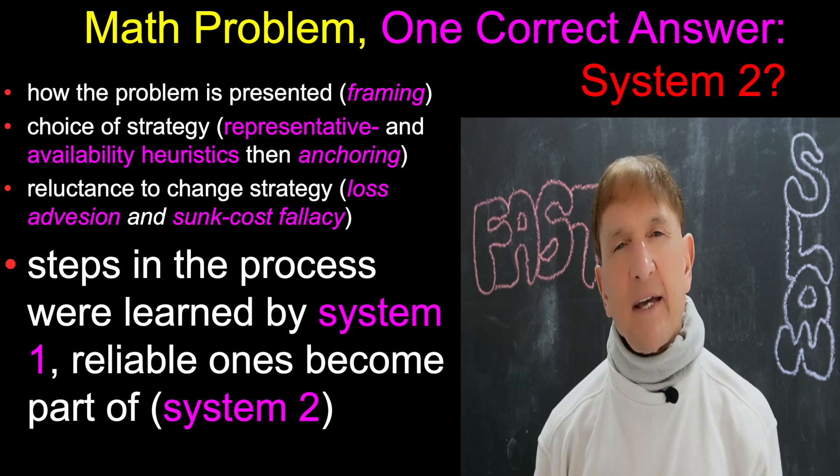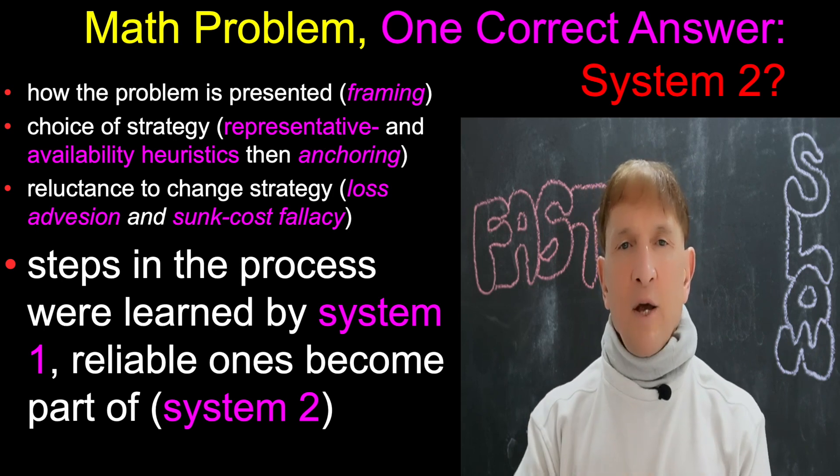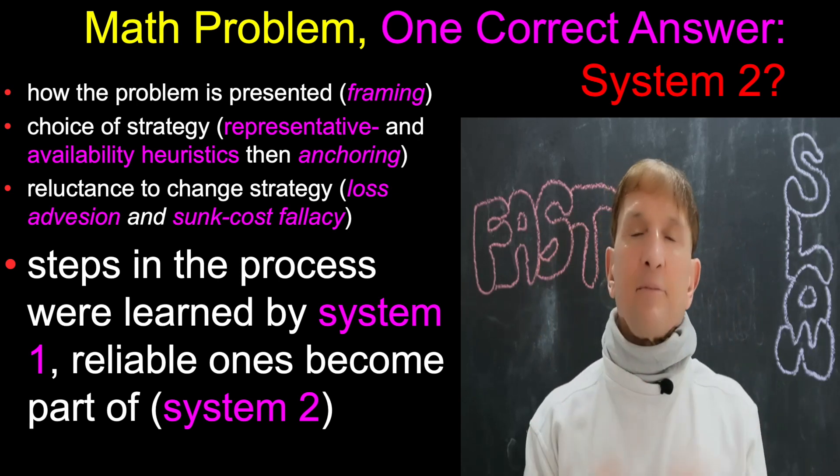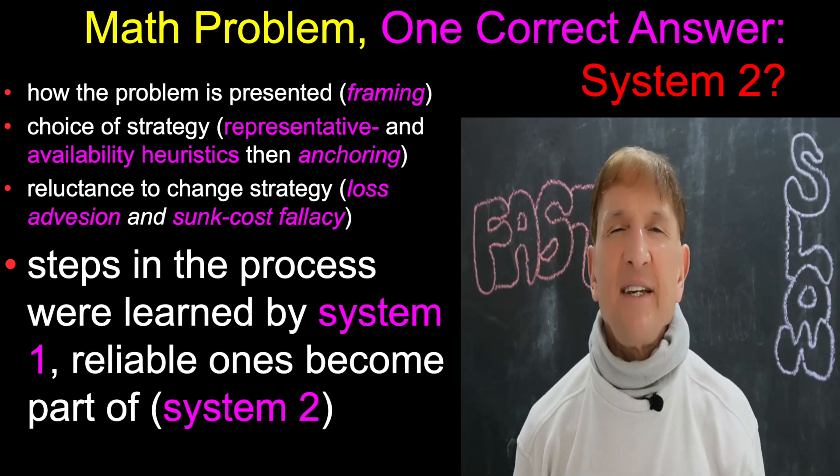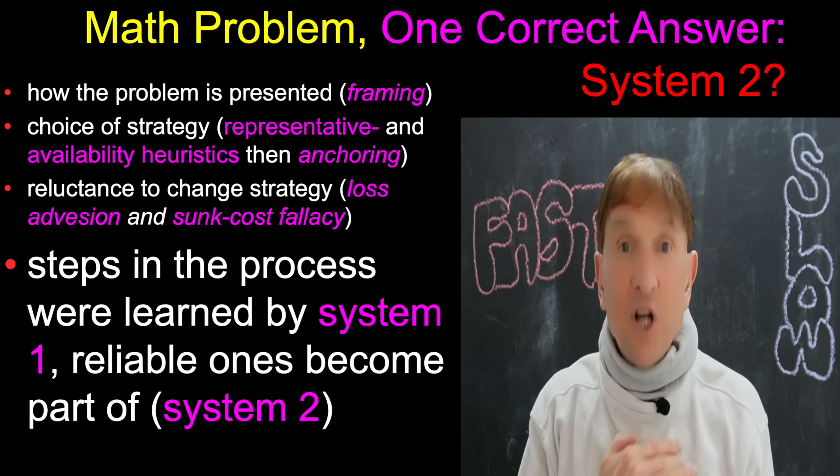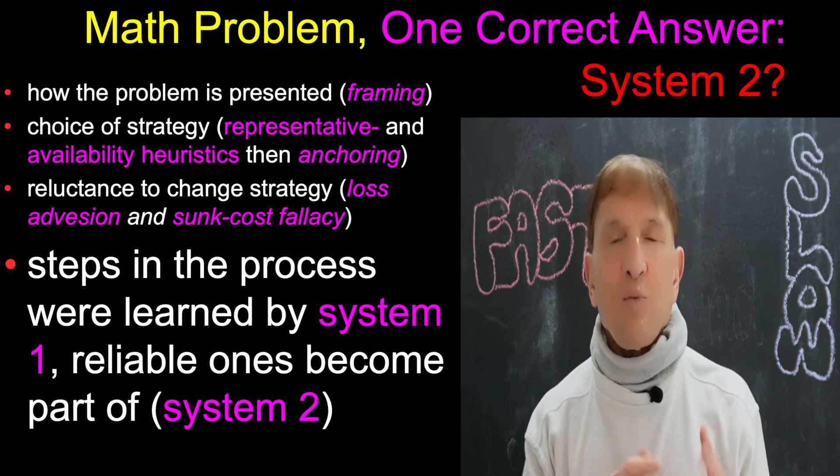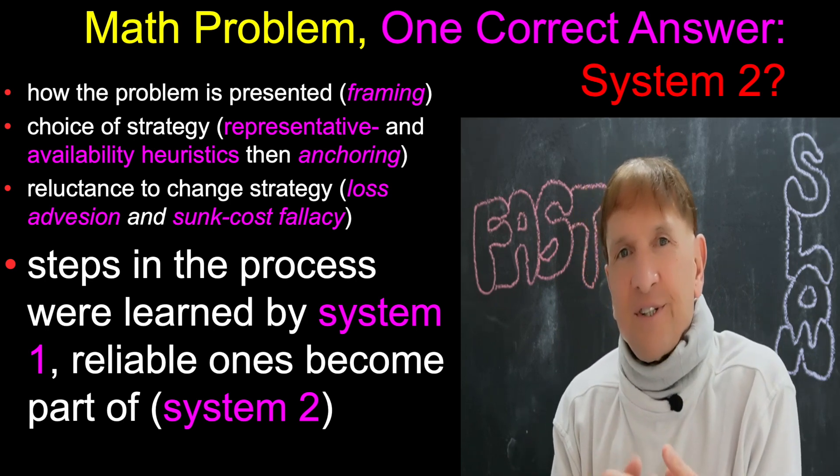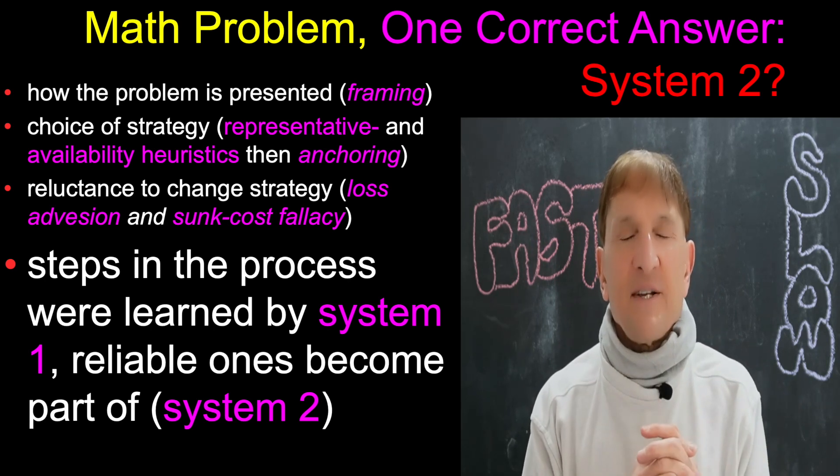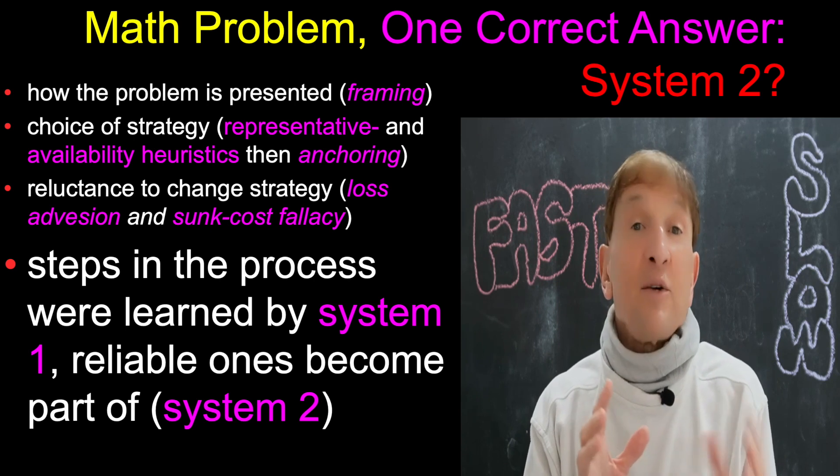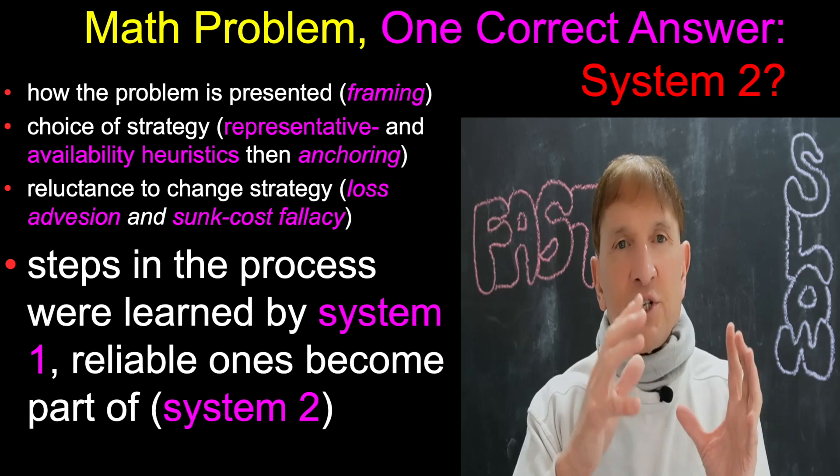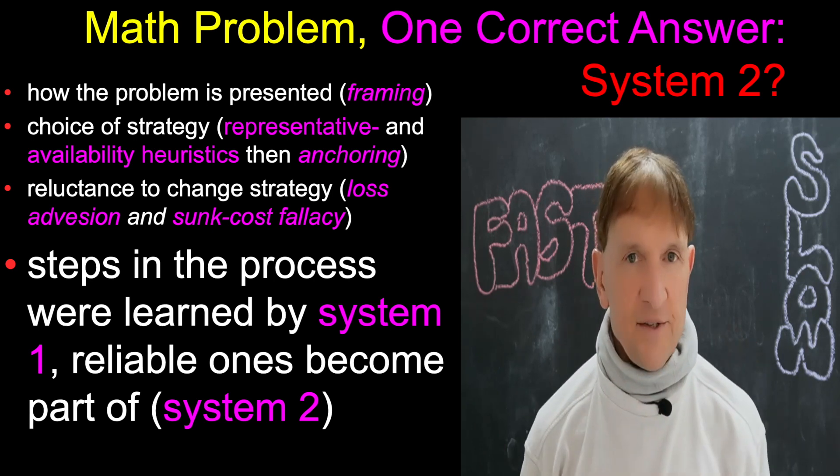So in something as logical as a math problem, where there's only one answer, for instance, you might think it's all System 2. But actually, the math problem might be solved by a series of steps. And how did the mathematician learn those steps? By using System 1, trial and error, seeing what felt good, seeing what really worked, and then ingraining them over so many years of practice. He knows exactly what situations to apply them in. System 1 provided the knowledge to learn the steps to get to a logical answer.